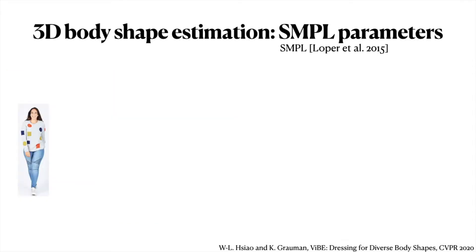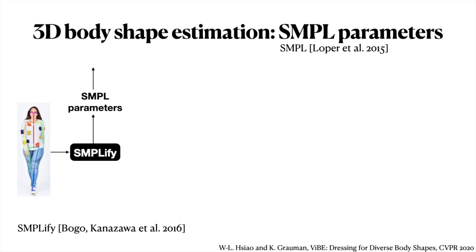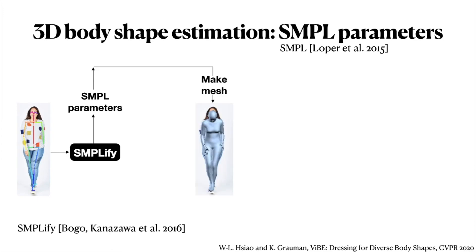The 3D body features are the parameters of the skinned multi-person linear model, SMPL. Given an image, we first estimate its body joints, which is required for our body estimation model to obtain the SMPL parameters. By rendering the parameterized human body, we see that it is not accurate enough, and in this case, slimmer than the subject in the image.